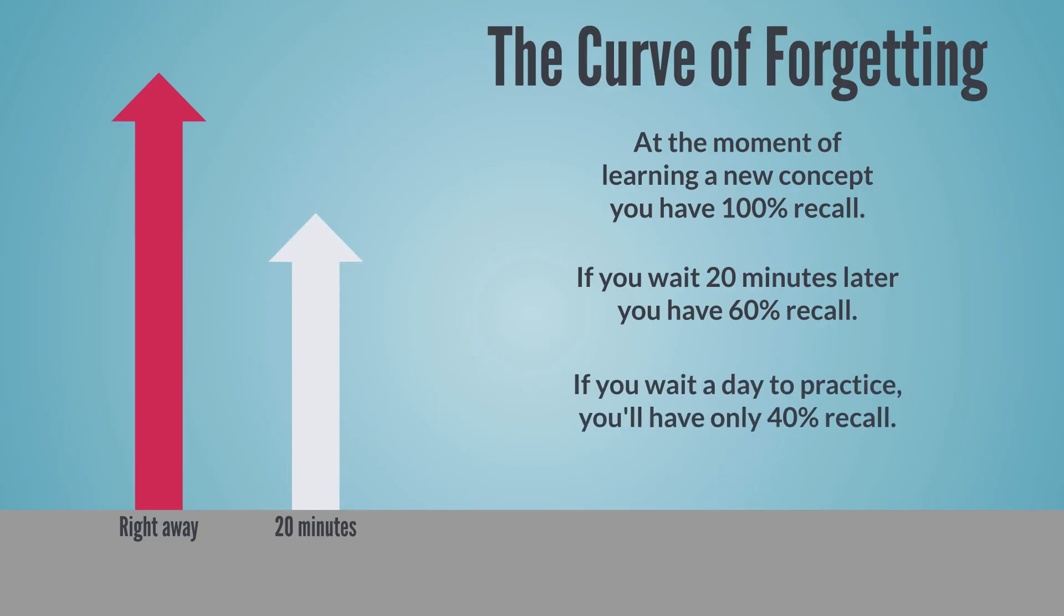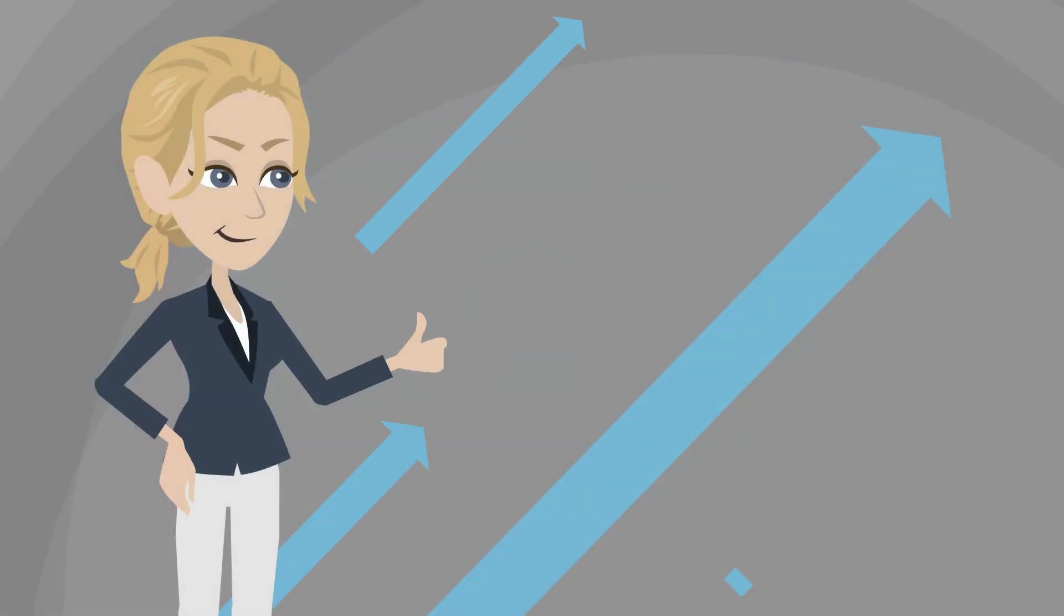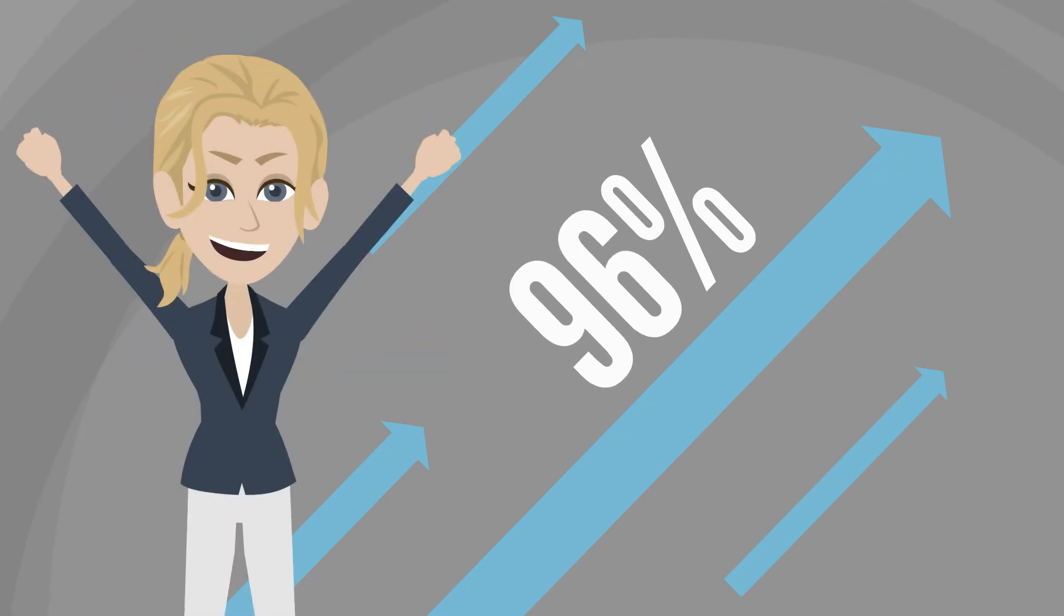This shows that doing work right after learning a concept will help you retain information. You can also slow that forgetting curve down dramatically by revisiting the work again at regular intervals. This combination will allow you to recall with 100% accuracy all that you want to remember.